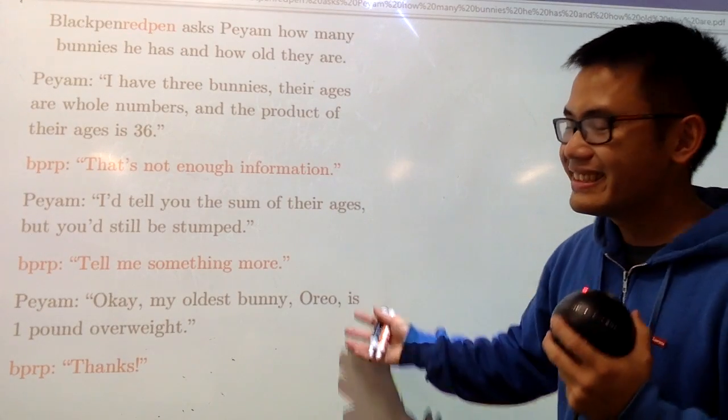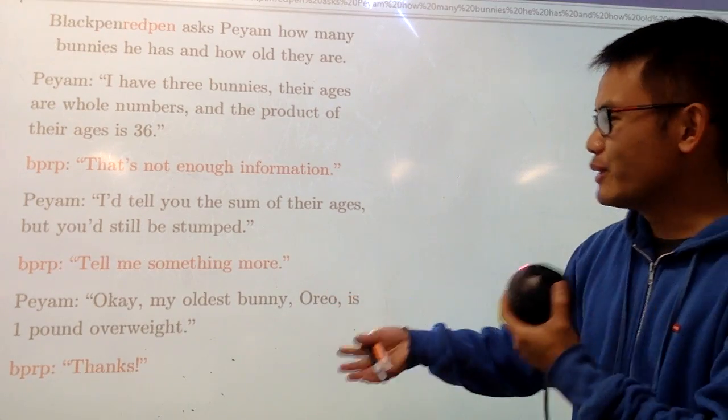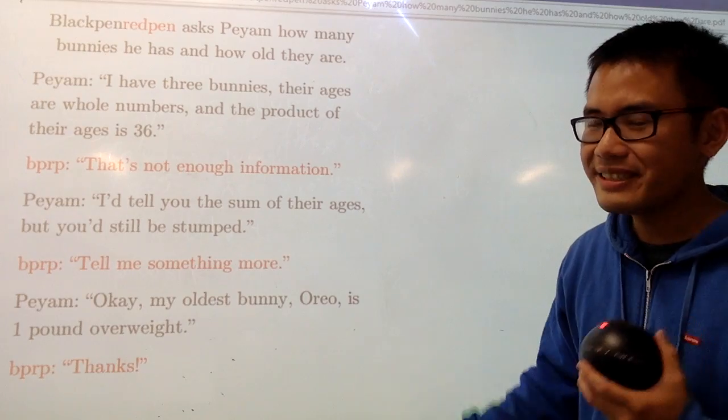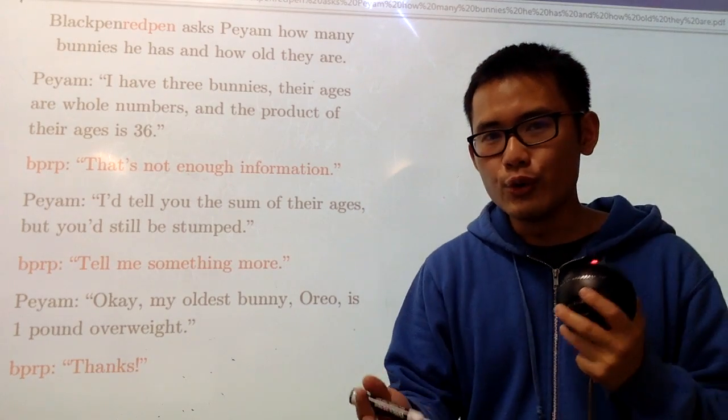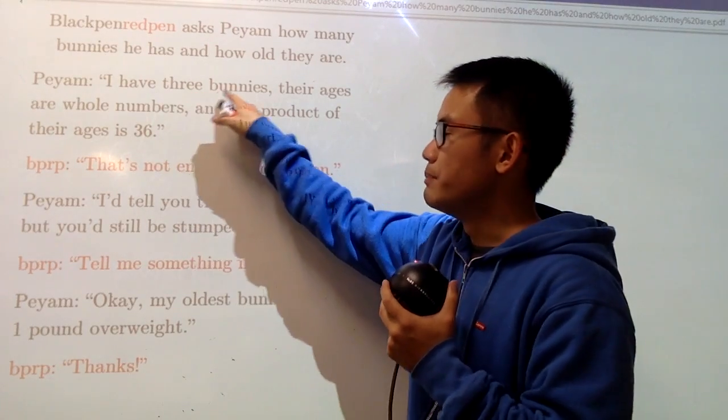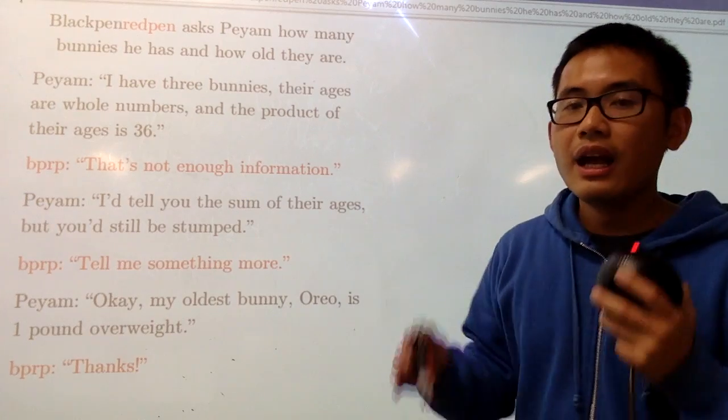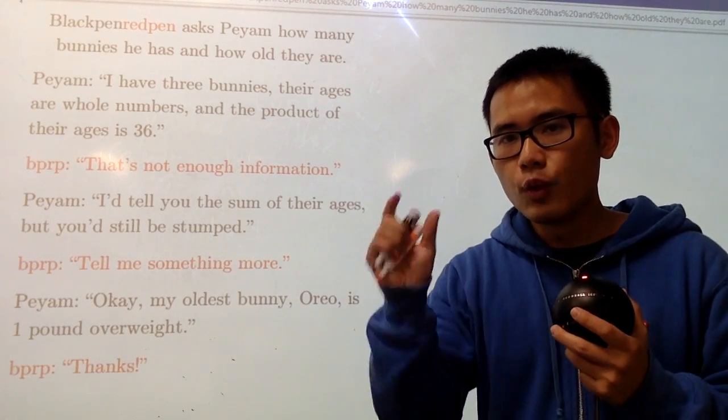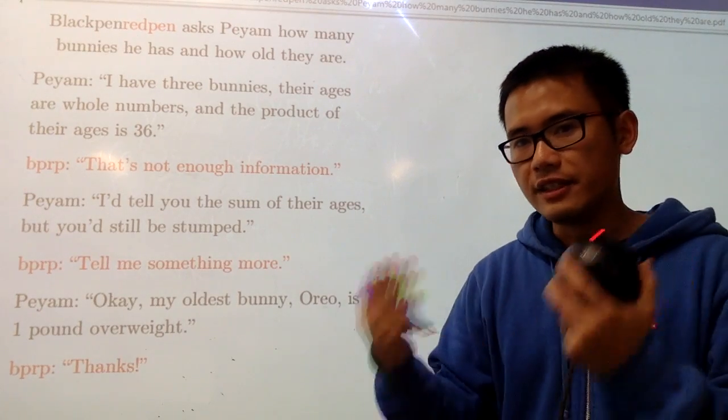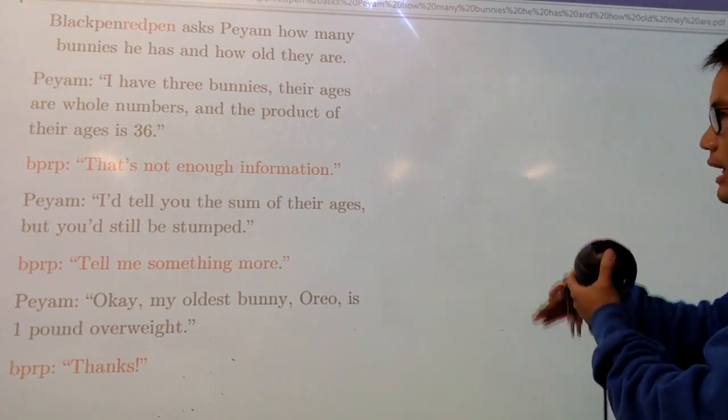Hopefully you guys have a chance to try this, and in fact, this is a pretty well-known puzzle, and it seems like we still don't have enough information. However, I will show you how to break down each and every piece. First of all, Payan has three bunnies, and the product of their ages is 36. Therefore, why don't we look at what times what times what will give us 36? Let's just list out all the possibilities, and then we'll make some observations.